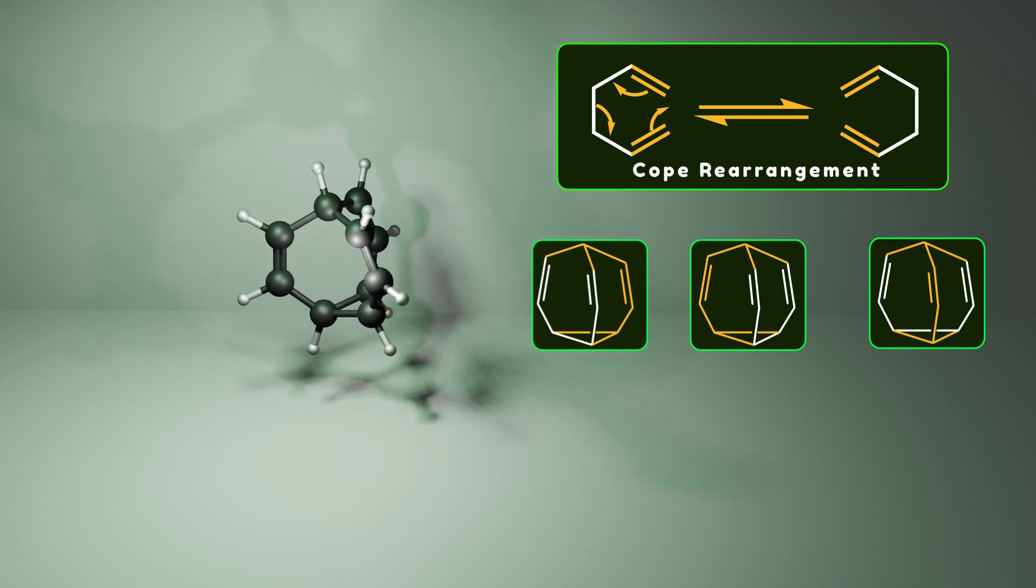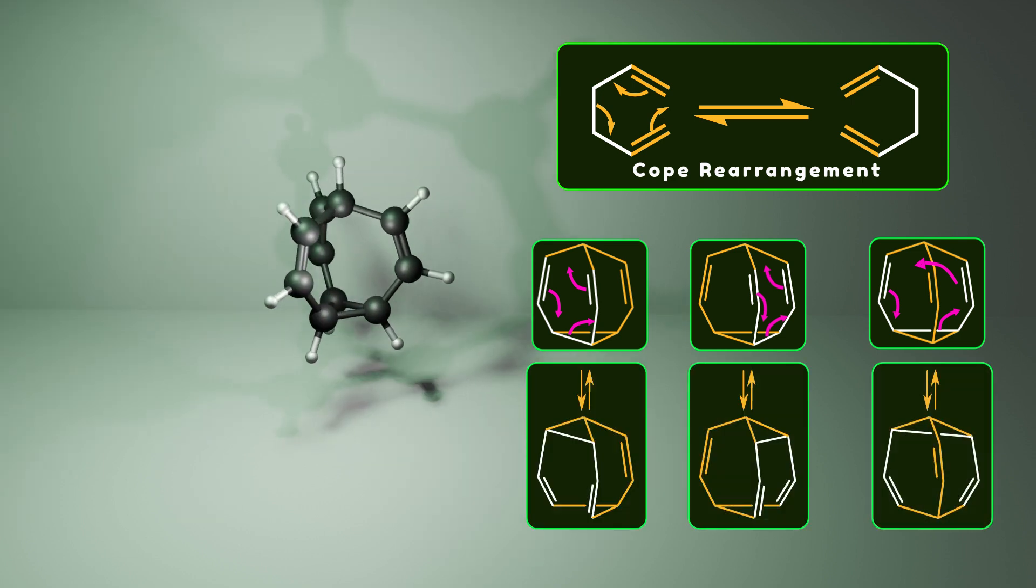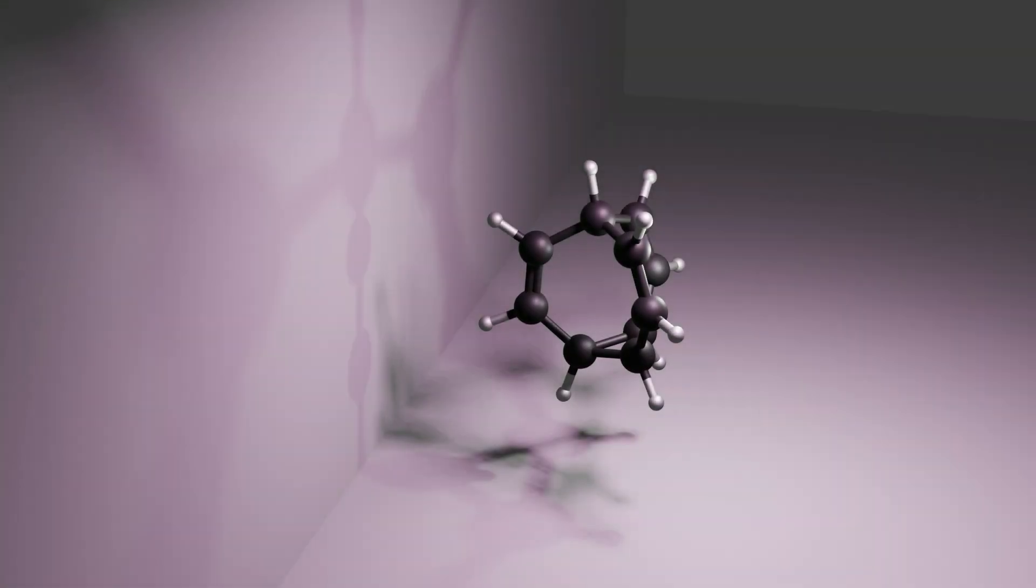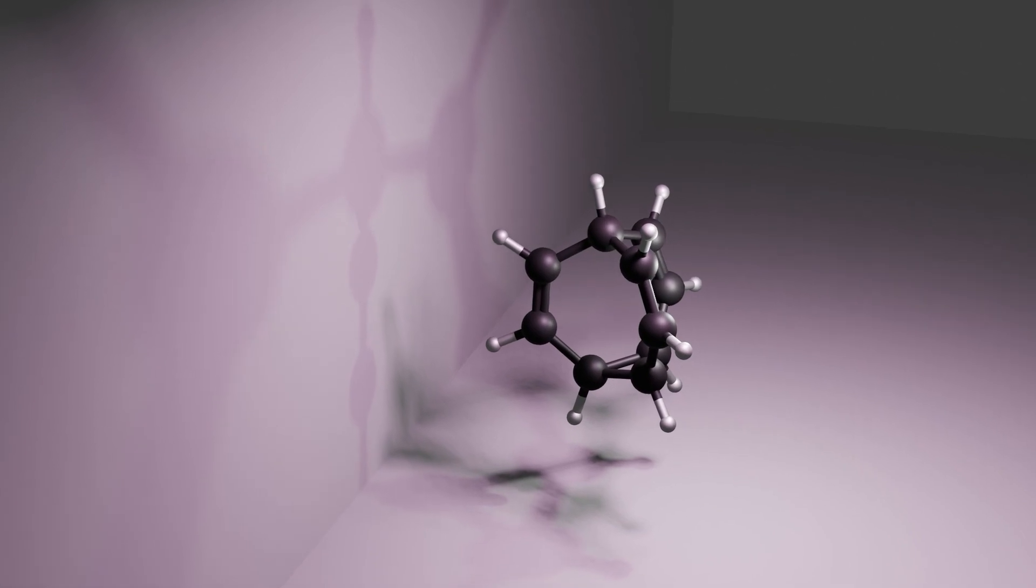So just like 1,5-hexadiene, the Cope rearrangement occurs in the system in the left, right, and back phases of the molecule, resulting in producing degenerate structures. This is the reason for the fluxional behavior of Bullvalene.